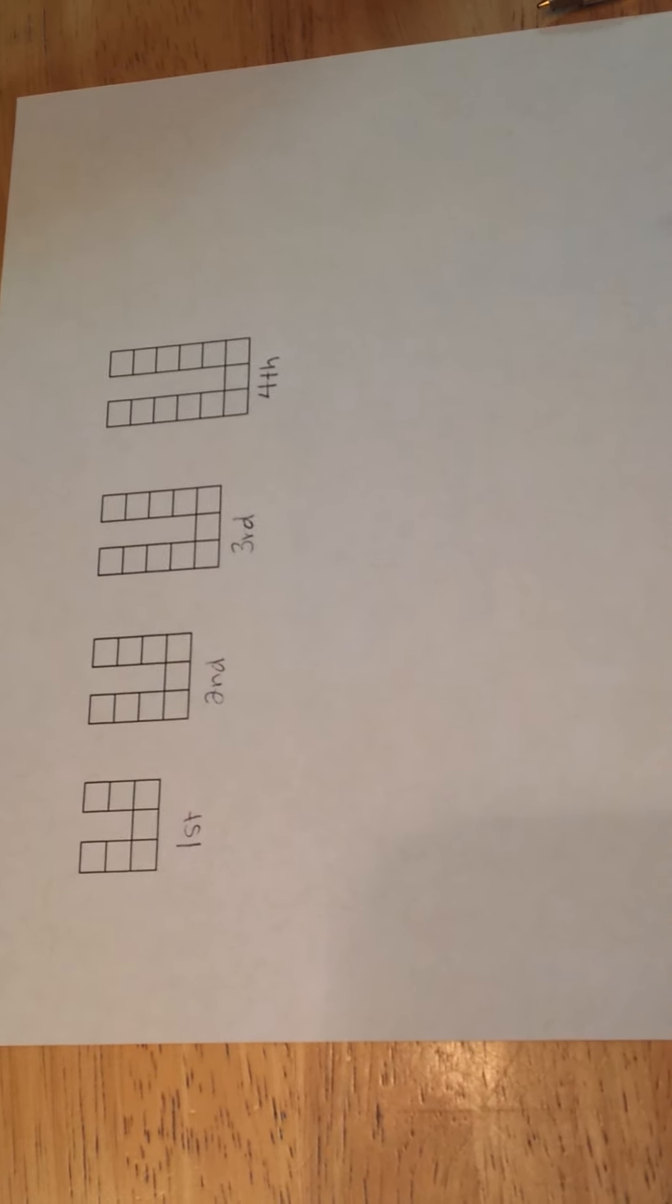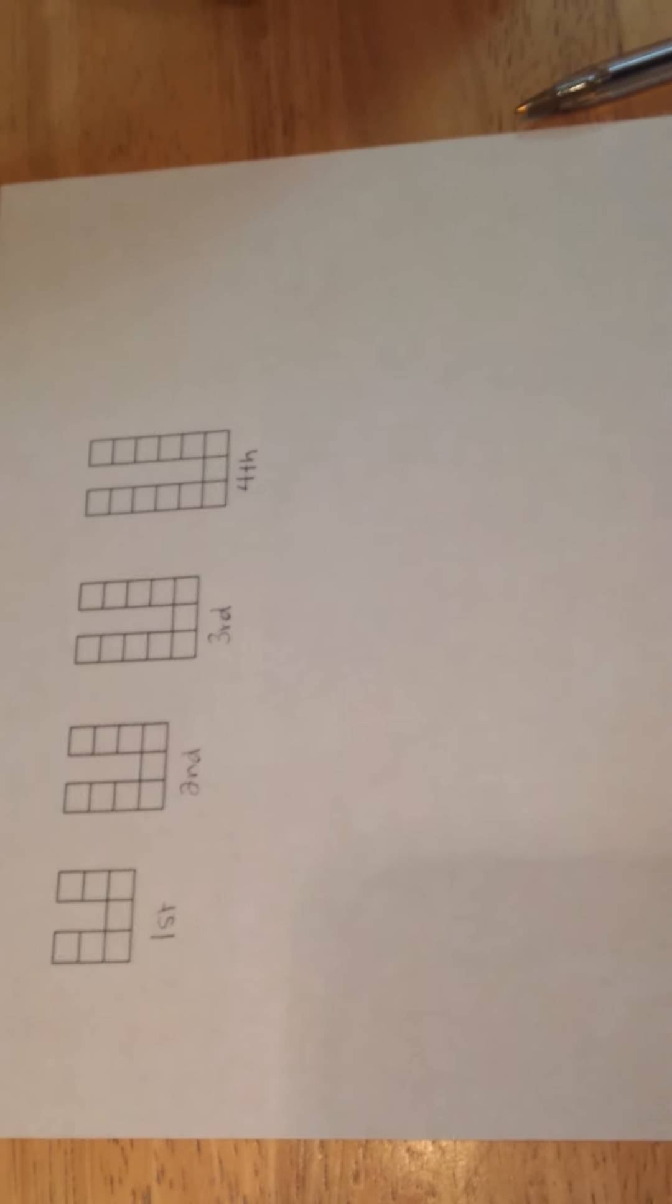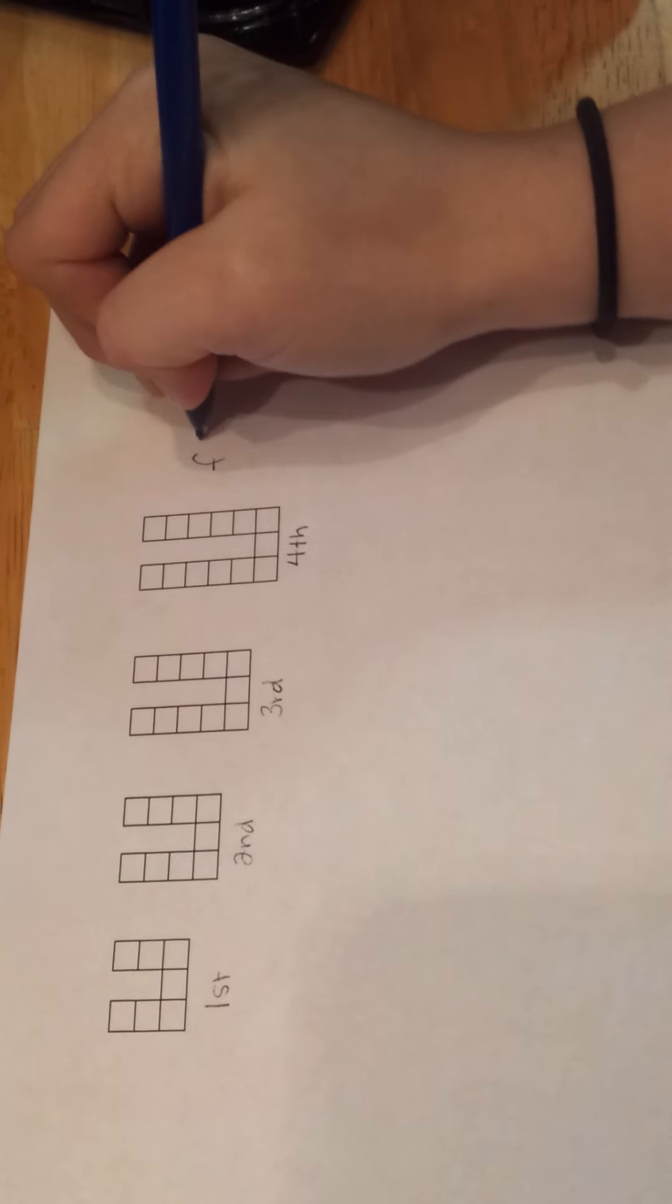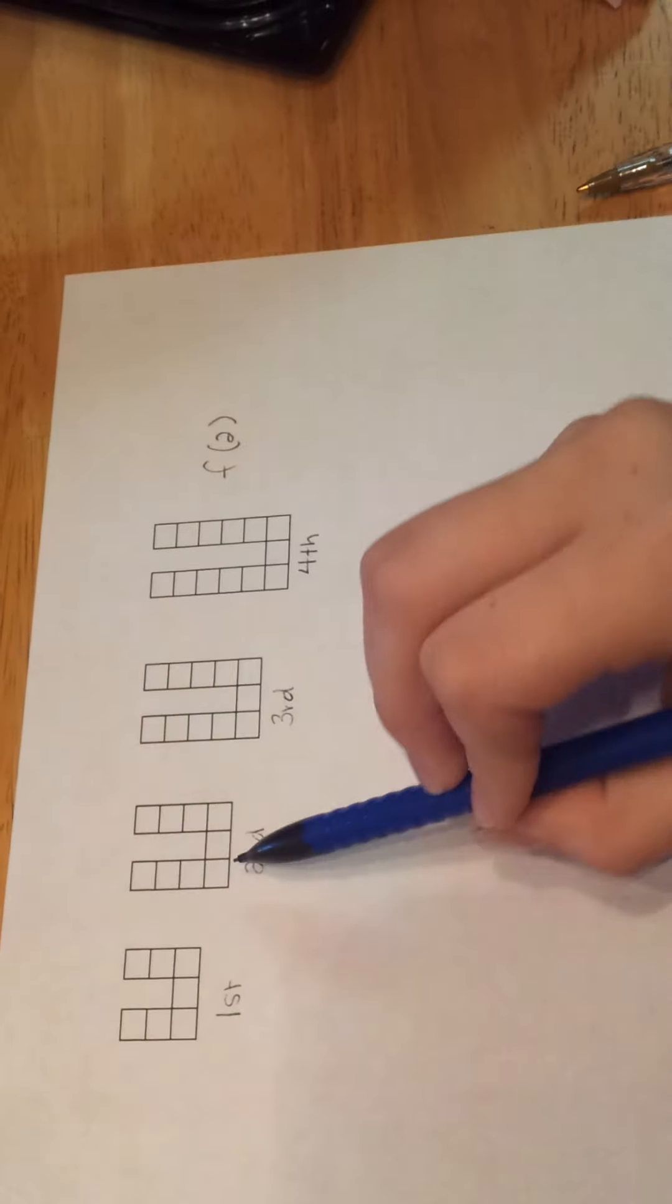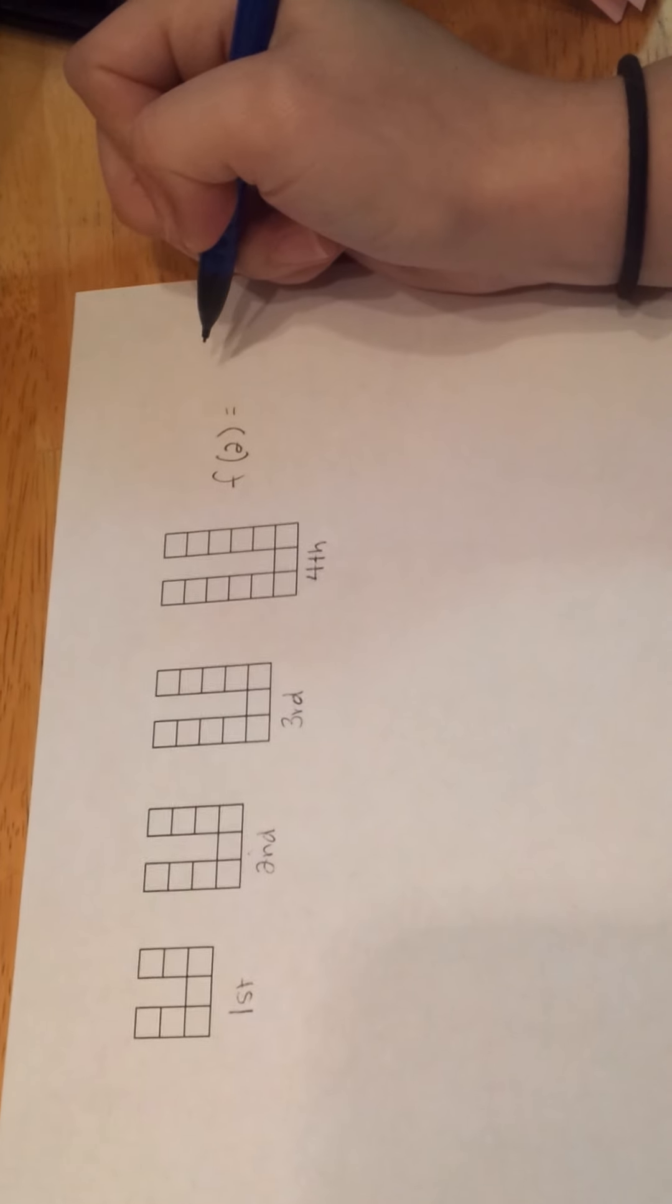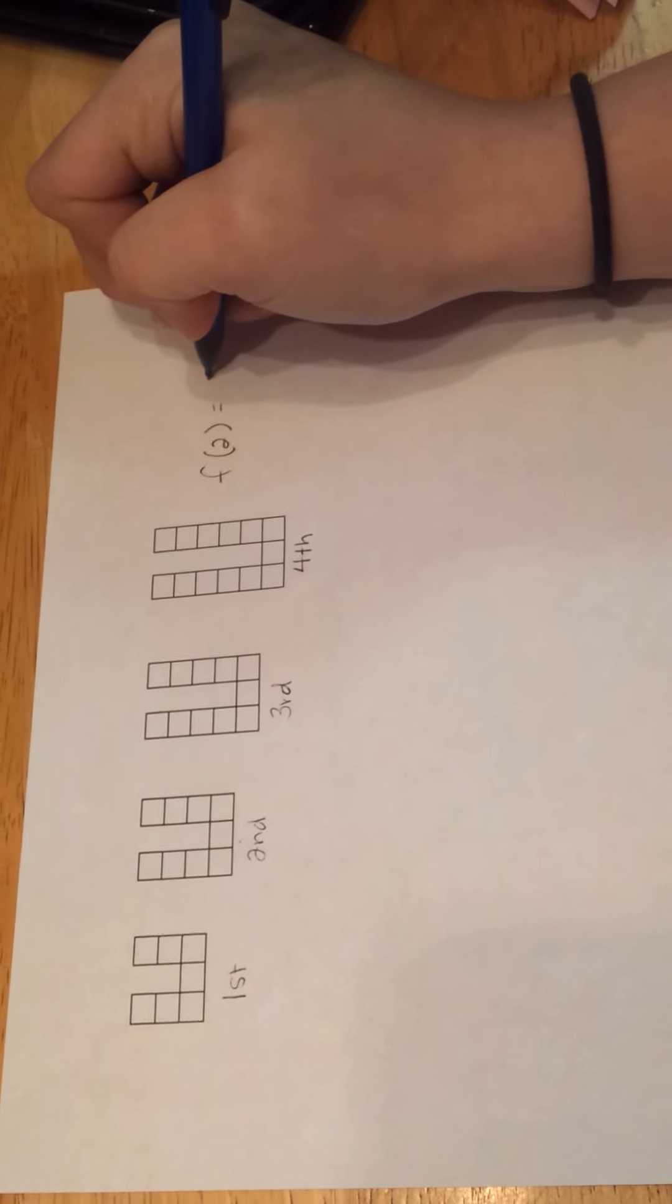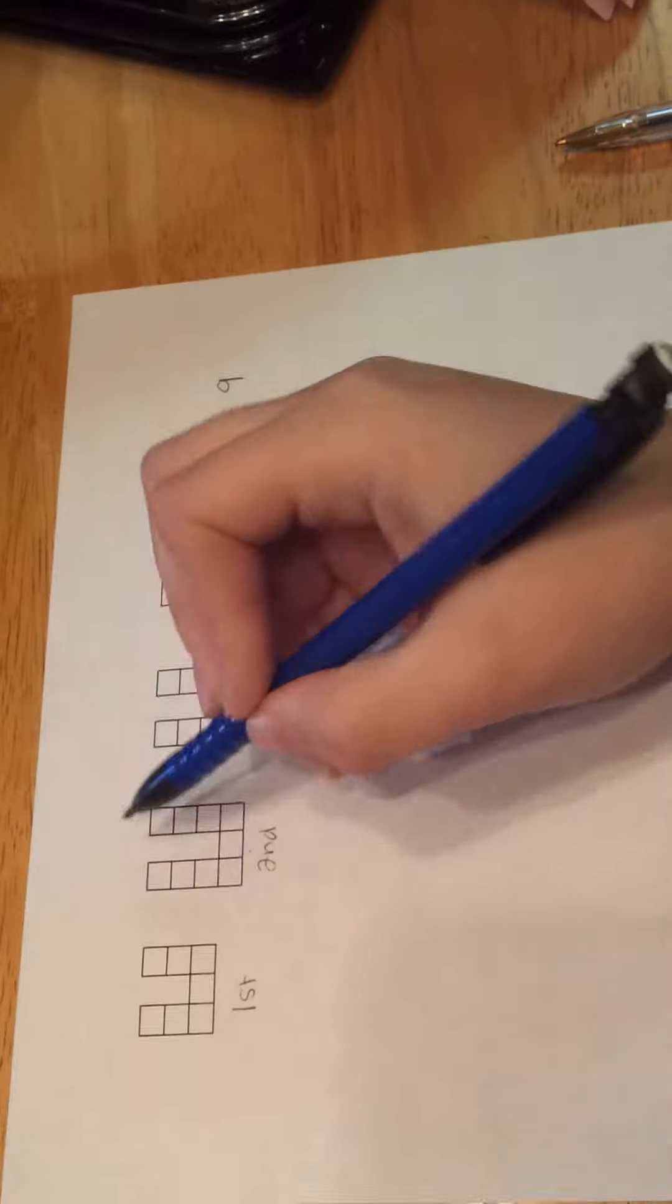For this problem, I'm going to show you how I got two different growth functions that model the number of squares in the nth figure. So for example, if we do f of 2, which is this figure, we want our function to give us 9, because there are 9 squares in it.